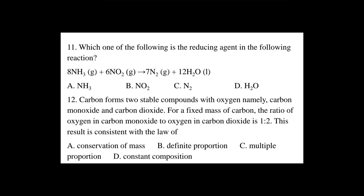Question number 11: Which one of the following is a reducing agent in the following reaction? A reducing agent is a substance being oxidized — it is the oxidized substance — and also causes reduction. The oxidation number increases. Hydrogen has a +1 oxidation number; nitrogen in NH3 has a -3 oxidation number.